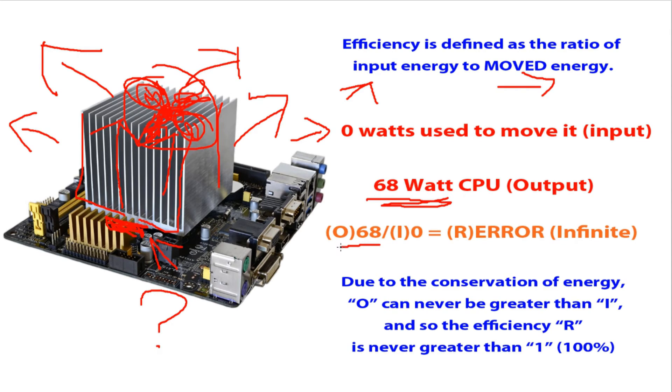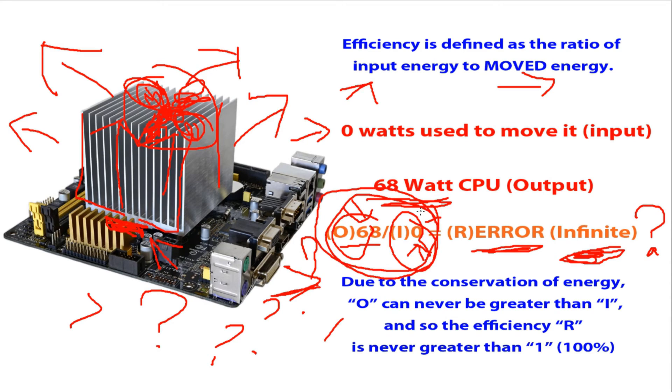So, our maths is this. Our output wattage is 68, divided by our input power, which is 0. And the ratio is in a big, fat error, or infinite. This is infinitely efficient. Because using 0 power, but it's able to move 68 watts. Question marks. Piles of them. Back to conservation of energy. Due to the conservation of energy, O, or output, can never be greater than I. Which is here. But in this example, just like the other one, the output is much greater than O. And so, the efficiency, R, is never greater than 100%. But in this example, it's infinitely efficient. I do not understand. Error. Error. Error.